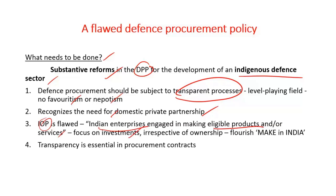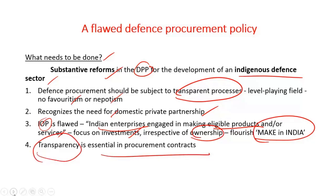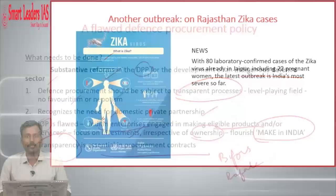Rather, the focus should be on improving investments irrespective of ownership — even a foreign company can start a unit in India to undertake the offset program, which would also flourish the Make in India initiative. Transparency must be made essential in procurement contracts. India's defense procurement has been marred by corruption charges — in the 1980s there was Bofors, and now there are corruption charges over the Rafale aircraft. Without implementing suggested reforms, the DPP would become flawed.